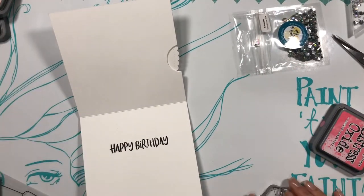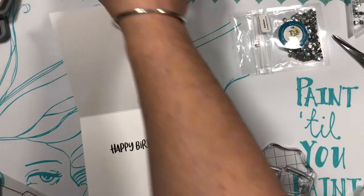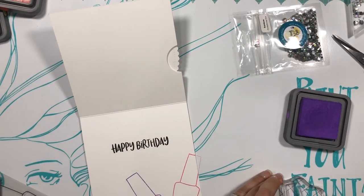So to finish off the inside of the card, I'm just going to take the nail polish bottle from the Shine On stamp set and stamp it in multiple colors just on the bottom of the card.